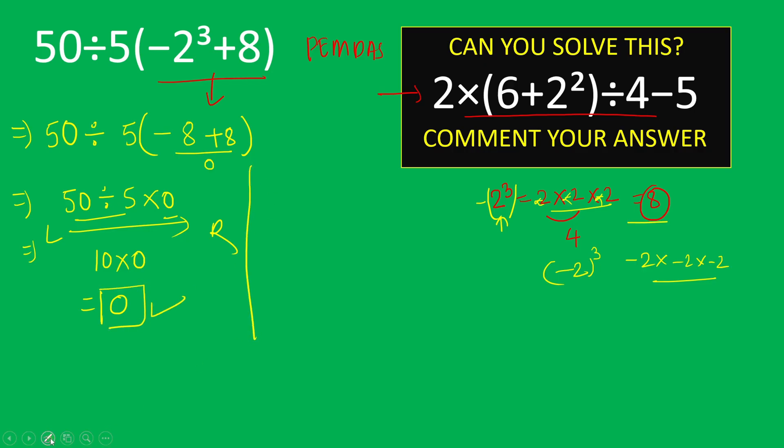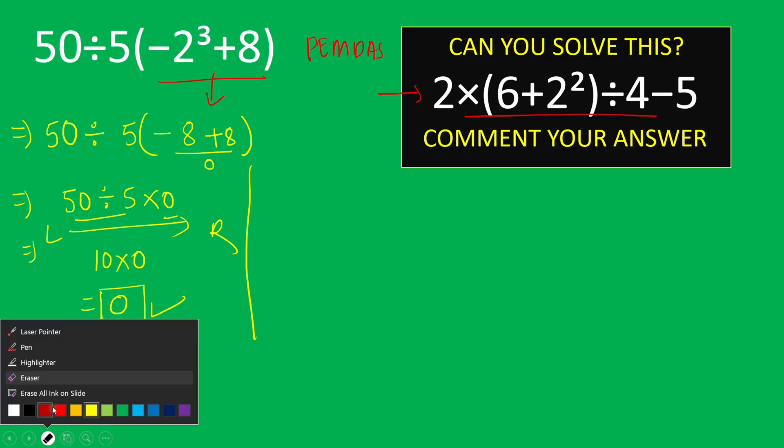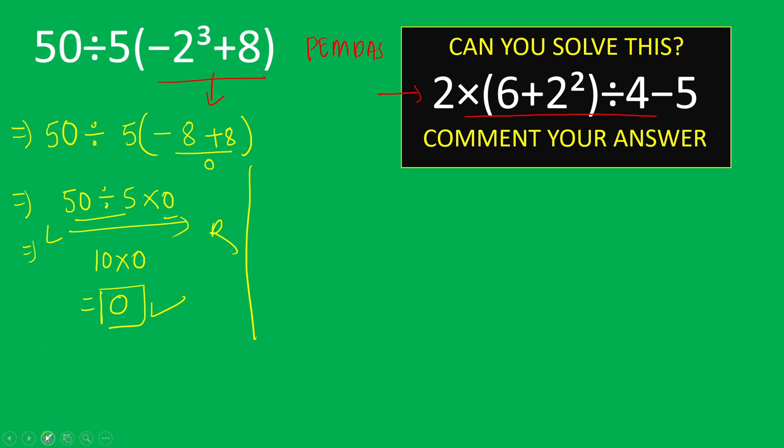Moving to the next question, let's erase these values first. And we have 2 times, parenthesis 6 plus 2 squared, close parenthesis, divided by 4 minus 5.